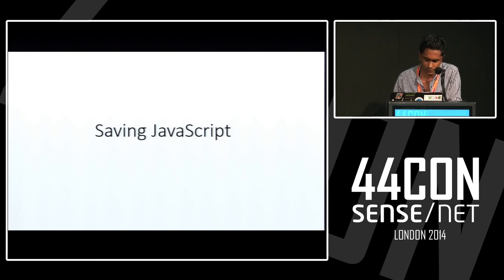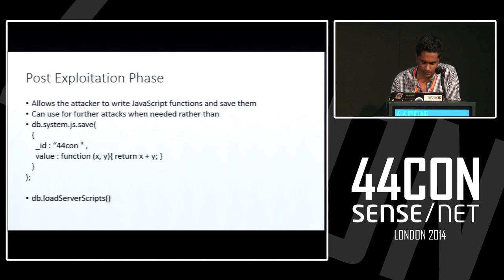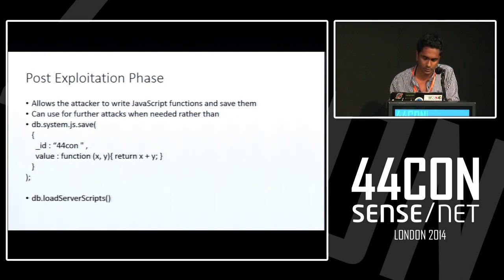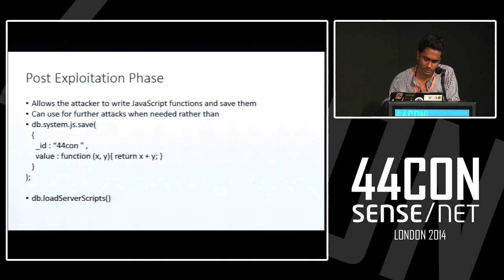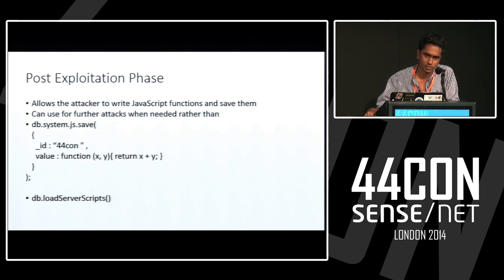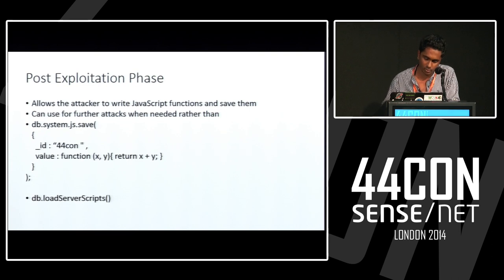Saving JavaScript is one of the features used for the post-exploitation phase. It allows the attacker to write JavaScript functions and save them. They can be used further when needed rather than writing the code again and again. You could give the ID — which is the function name — and the value is how you define the function. To load the JavaScript function into the Mongo shell, you use the db.loadServerScripts() API. Once you call the function, it will return X plus Y. This is useful if an attacker writes a script to DoS the Mongo server — after getting in, he could just call this function rather than rewriting code.